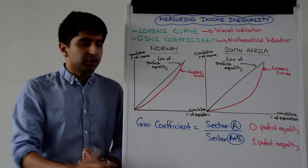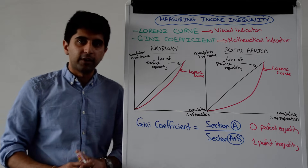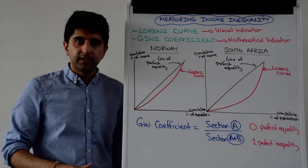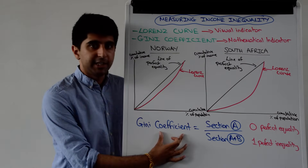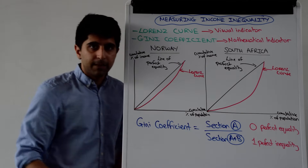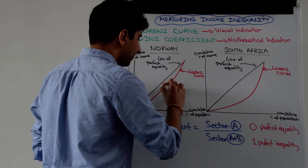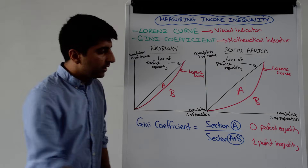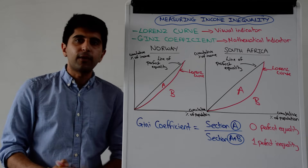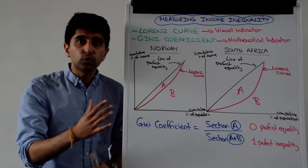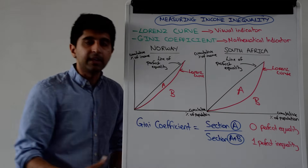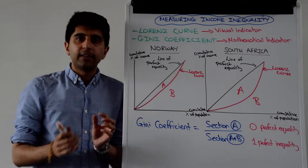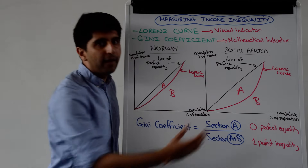The Gini coefficient can take this visual interpretation and convert it into a number. It measures how much distance there is between the Lorenz curve and the line of perfect equality compared to how much distance there could be. The equation is: Gini = A / (A + B). Section A is the total area between the Lorenz curve and the line of perfect equality; section B is the total area beneath the Lorenz curve; and therefore A plus B is the total area beneath the line of perfect equality.